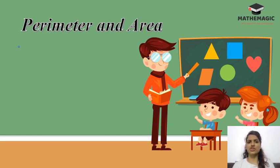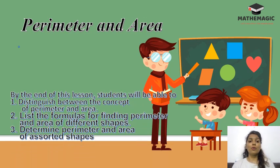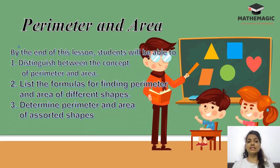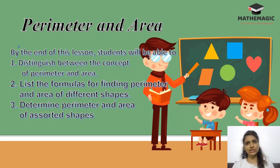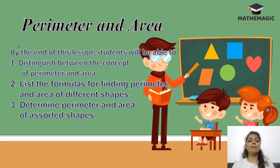that help us understand algebra, trigonometry, and calculus. By the end of this lesson, students will be able to distinguish between the concept of perimeter and area, list down the formulas for finding the perimeter and area of different shapes, and determine perimeter and area of assorted shapes.